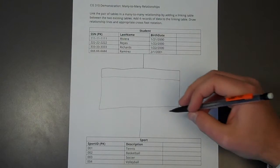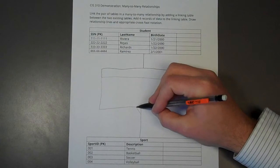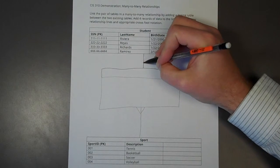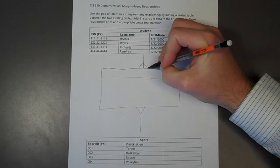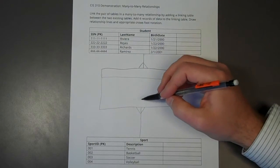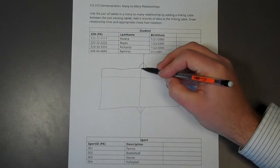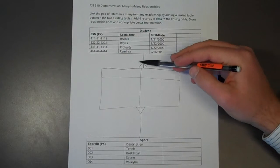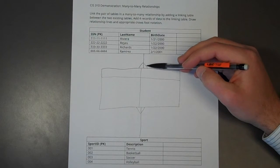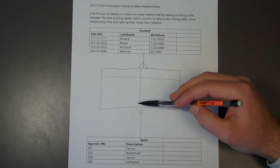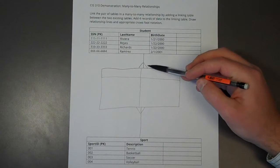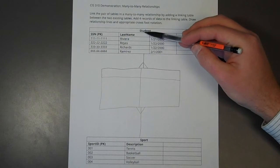Whenever you have linking tables or junction tables, the many side should be going into the linking table or the junction table. And remember, just like in a one-to-many relationship, the side that has the crow's foot gets a foreign key. And that foreign key should be the primary key of the table it's related to.